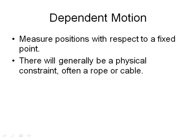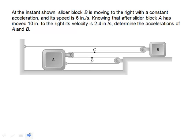So let's take a look at this with a real simple example. Here we have objects A and B — two blocks. Block B is attached to a cable and block A is attached to the same cable. If I move block B to the right, clearly block A is also going to move to the right, but the question becomes: how does the velocity of block B compare with the velocity of block A, or how does the acceleration of block B compare with the acceleration of block A?